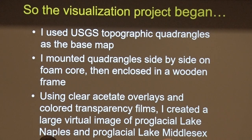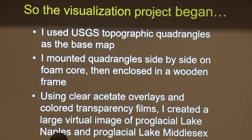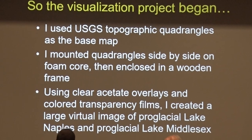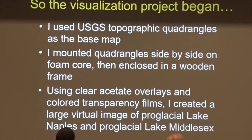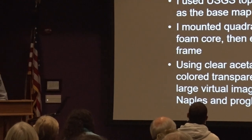Then I used clear acetate overlays on top of that map. And what I could do with non-permanent marker — non-permanent being the key adjective — I could draw in representative contour lines from the margin of the ice sheet up some distance from the edge using that modeling formula, that graph that you saw.